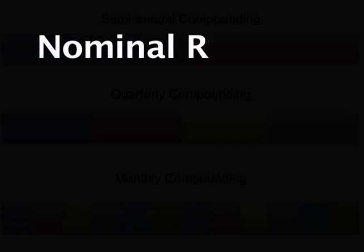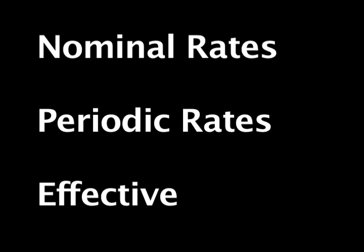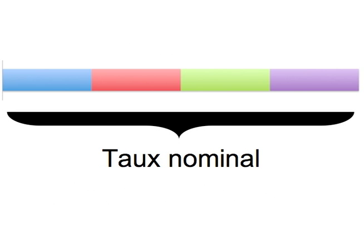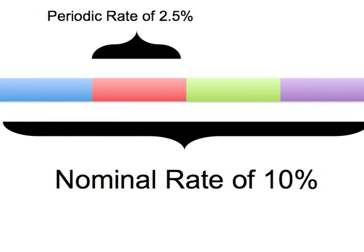The nominal rate is the annual interest rate when interest is compounded more than once a year, but you don't take compounding into account. The periodic rate is the interest rate of one period, like a month or a semester.